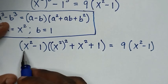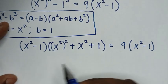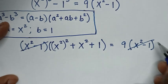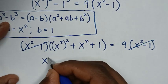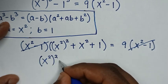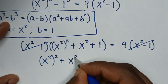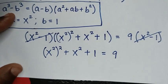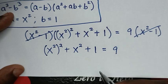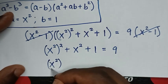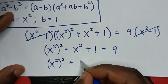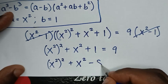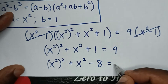Now, to simplify, into this side we have x square minus 1, and into this side we have x square minus 1. So, this will cancel this. So, it will be x square bracket square plus x square plus 1 is equal to 9. Then, we take 9 to the left side. So, it will be x square bracket square plus x square, and 1 minus 9 is minus 8, then it is equal to 0.